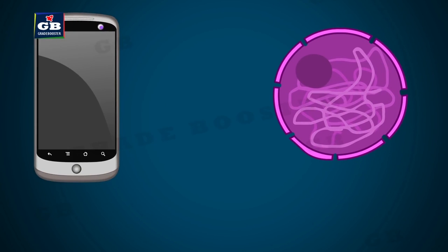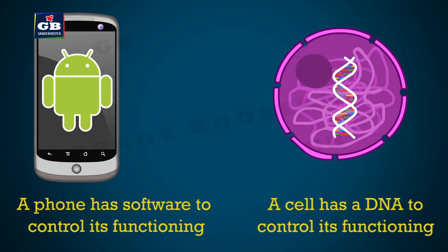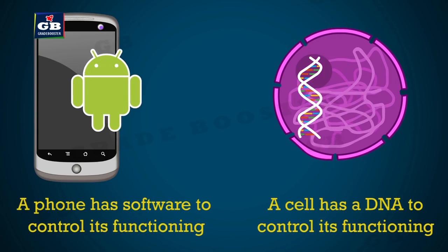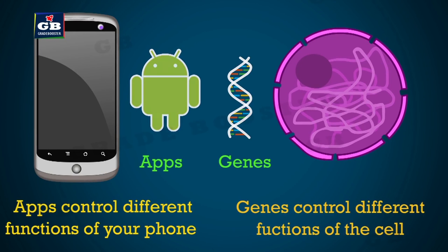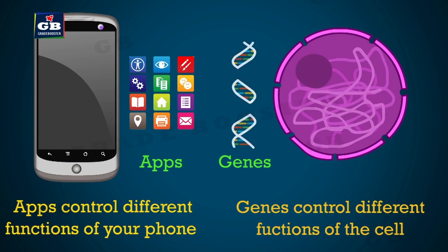To understand chromosomes, consider your phone: it has software to control its functioning, and in the same way every cell has DNA to control its functioning. Phones have different apps to execute different tasks; similarly, DNA has different genes to execute different tasks. Functional segments of DNA are called genes.